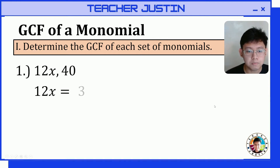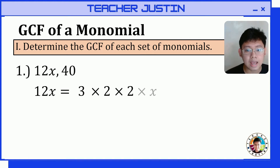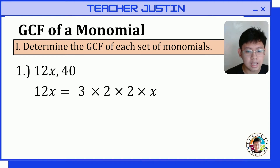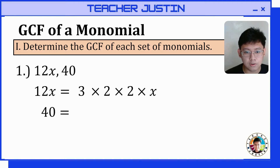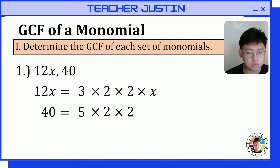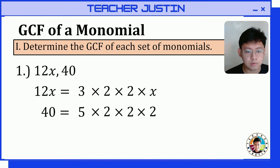The prime factorization of 12x is 3 times 2 times 2 times x. Then for 40, the prime factors are 5 times 2 times 2 times 2.